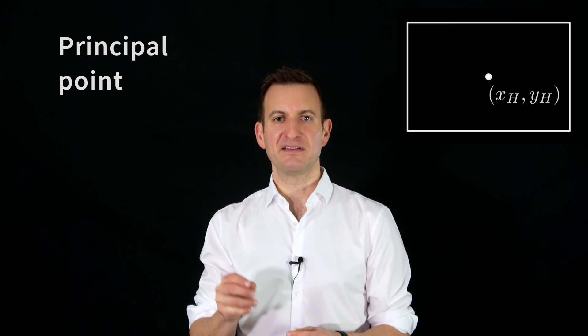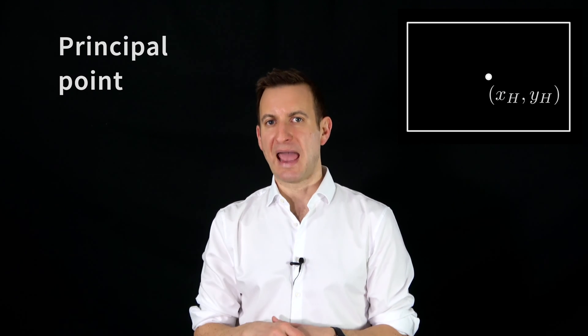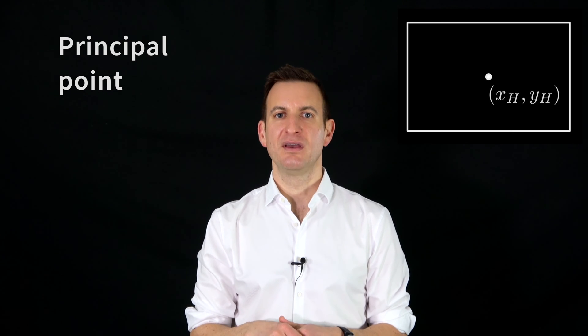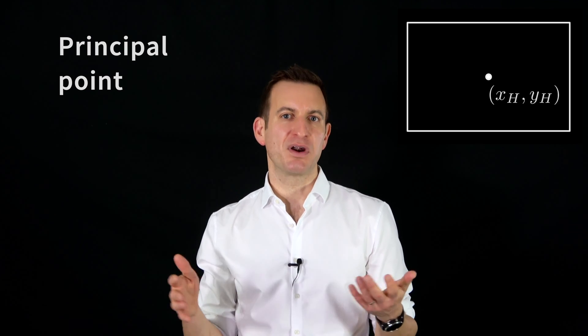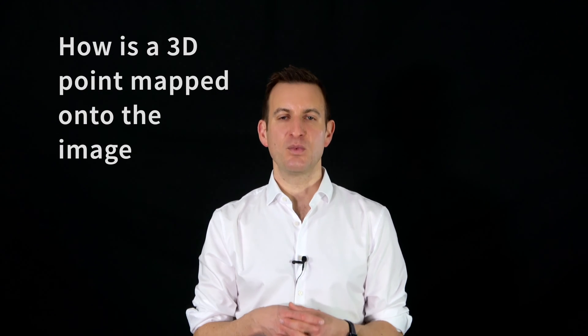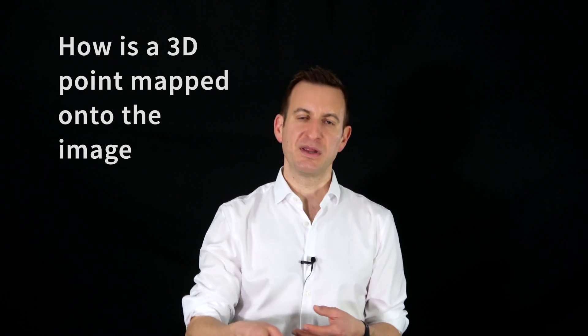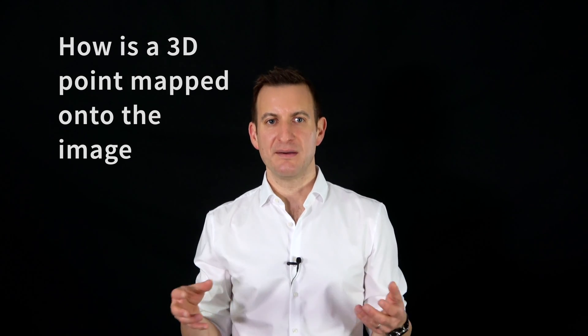We also have two parameters for the so-called principal point — the pixel in your image through which the optical axis of the camera passes. It typically sits near the center of the image, but not precisely, because the chip is not precisely glued into the camera. If you have an analog camera, you also have a shear parameter; in most digital cameras this shear parameter should be very close to zero.